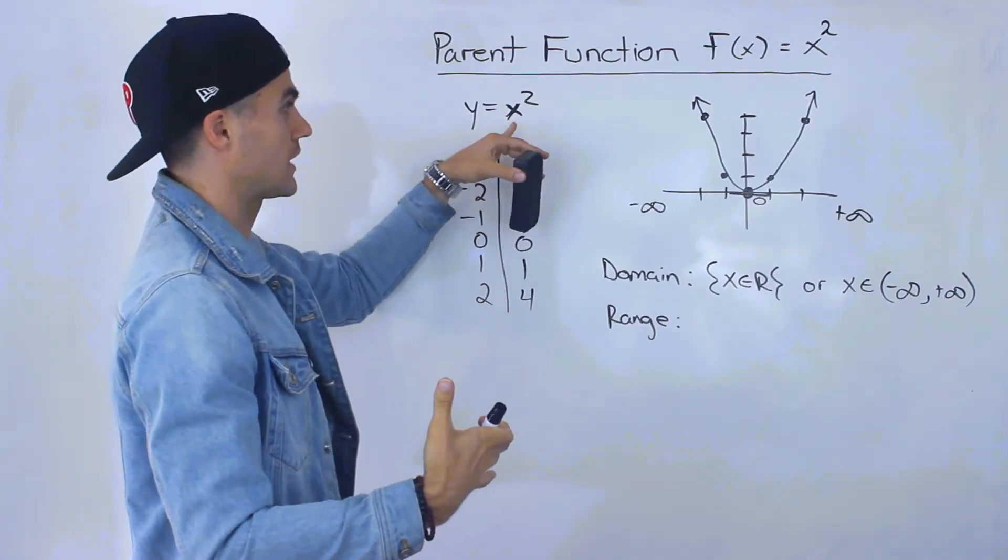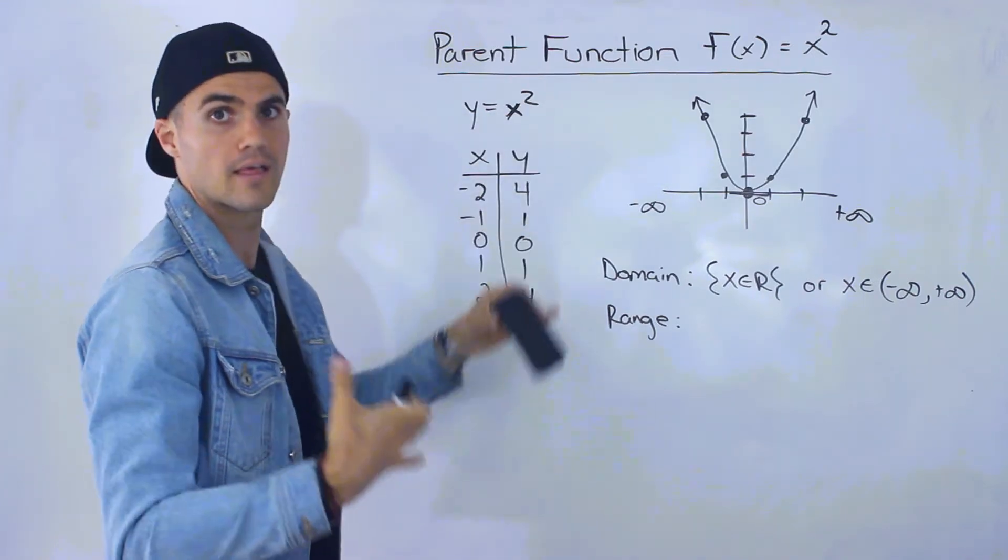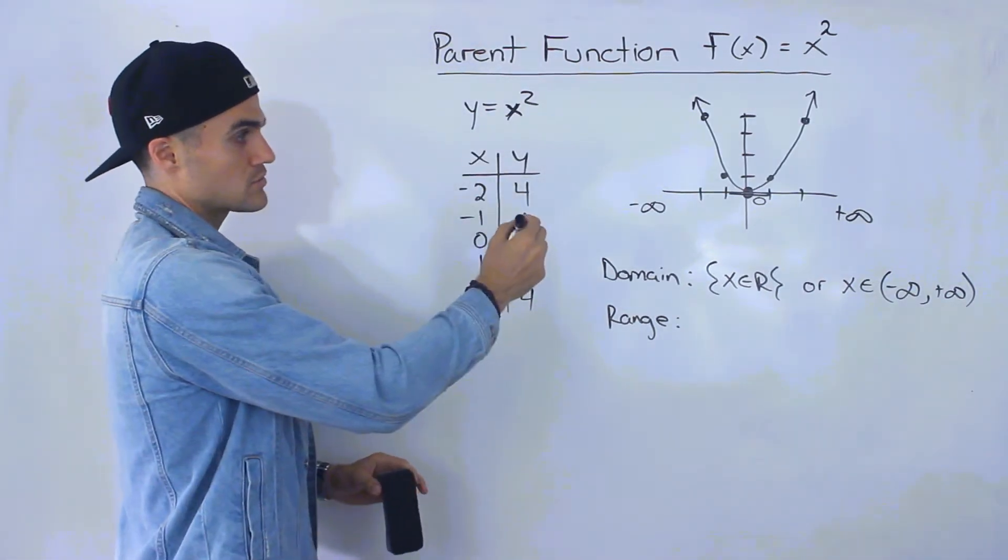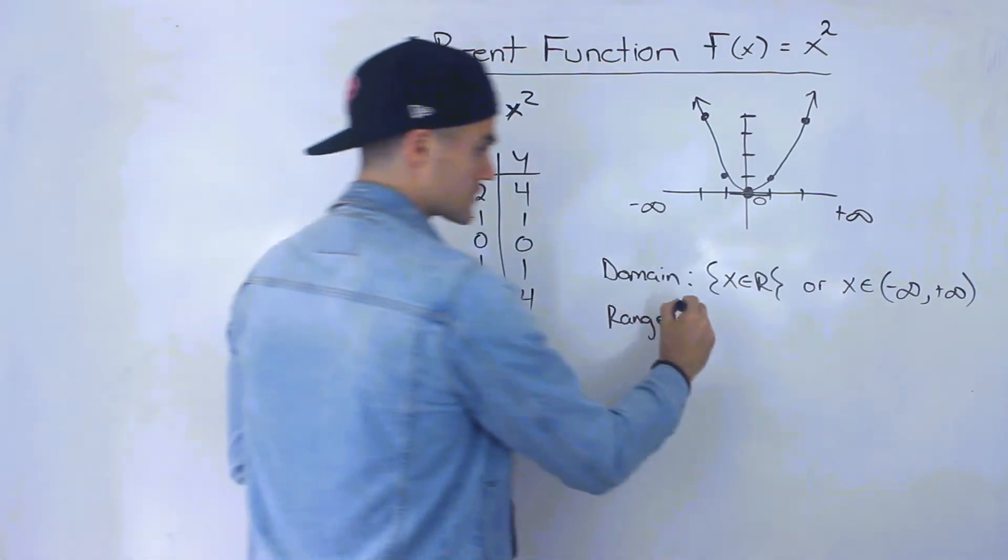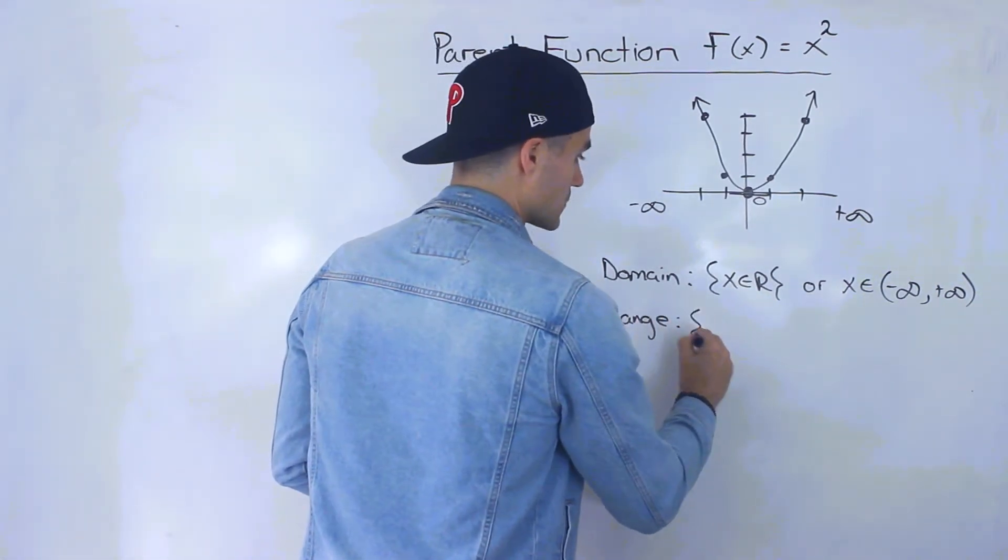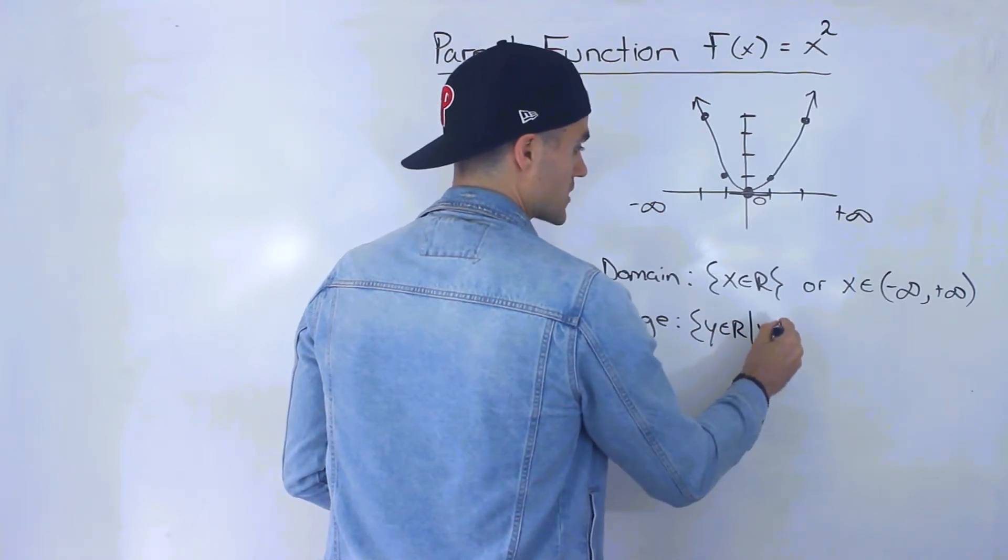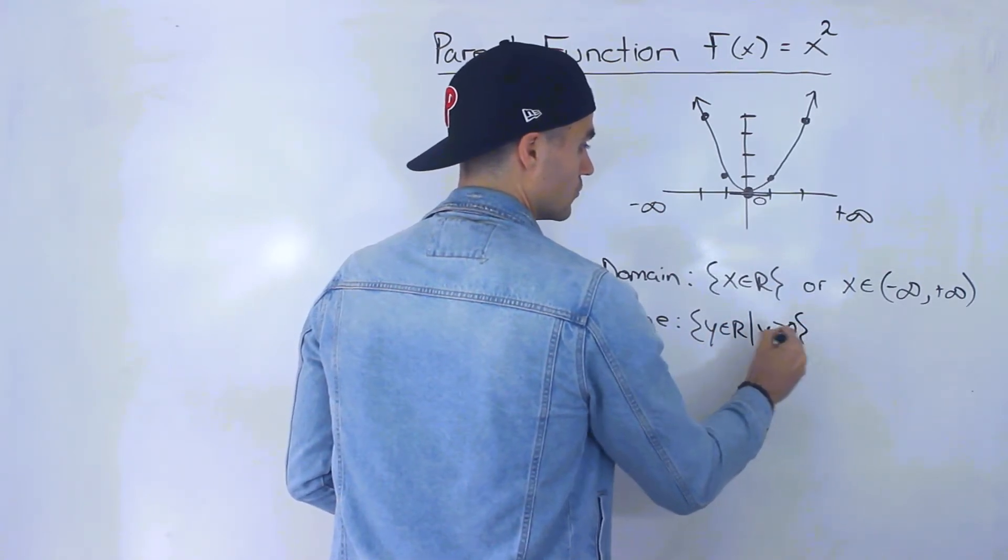For example, if we plug in negative 4 for x, negative 4 squared is positive 16. So the y values are always 0 or positive. The way we would show that is we would say y can be anything as long as y is greater than or equal to 0.